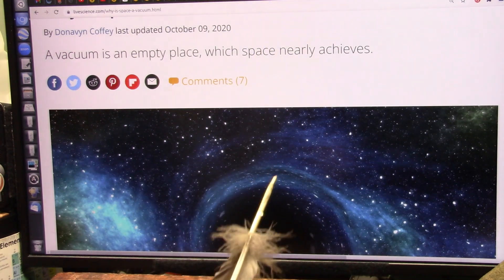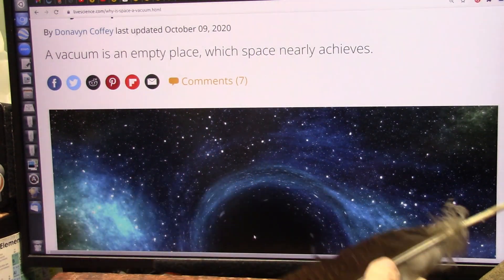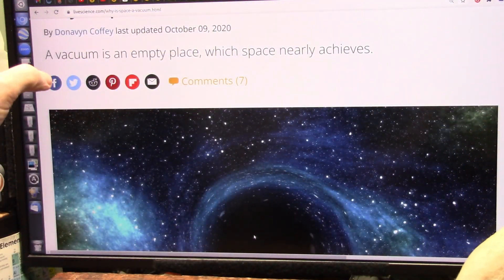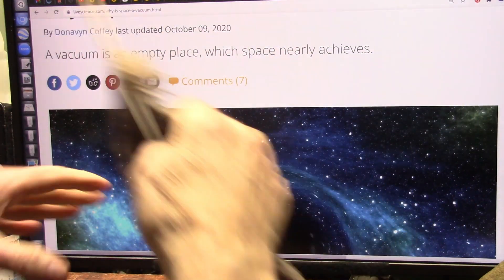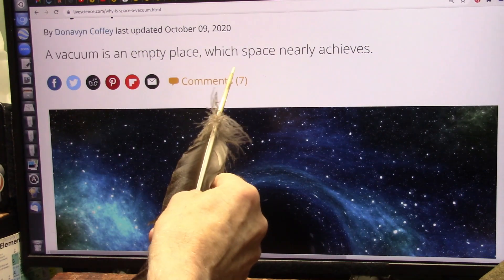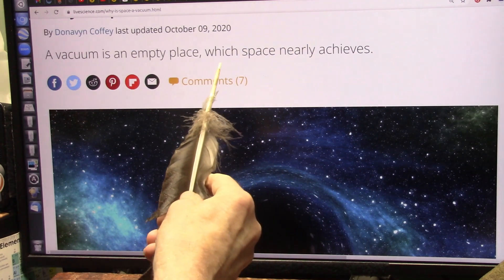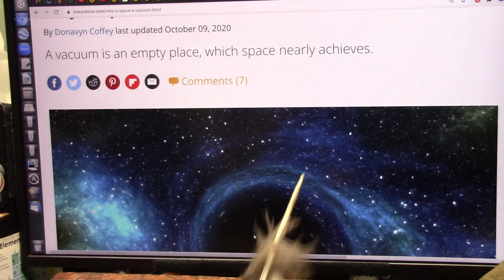Okay, my friends, I'm sure you've heard that space is a vacuum. There's just nothing out there in between all the planets and stars. It's just completely devoid of space. A vacuum is an empty place, virtually nothing there, which space nearly achieves.